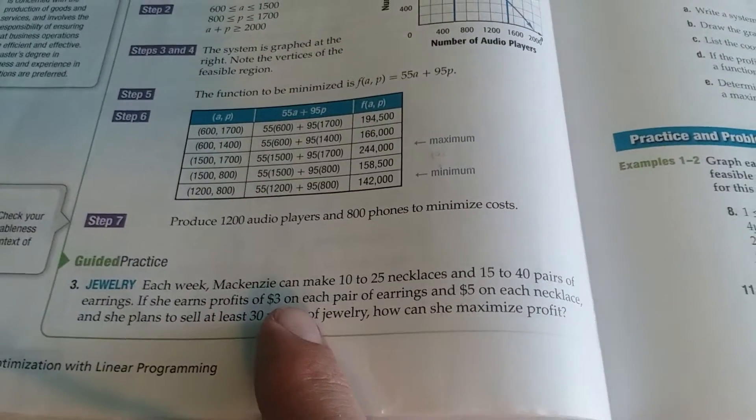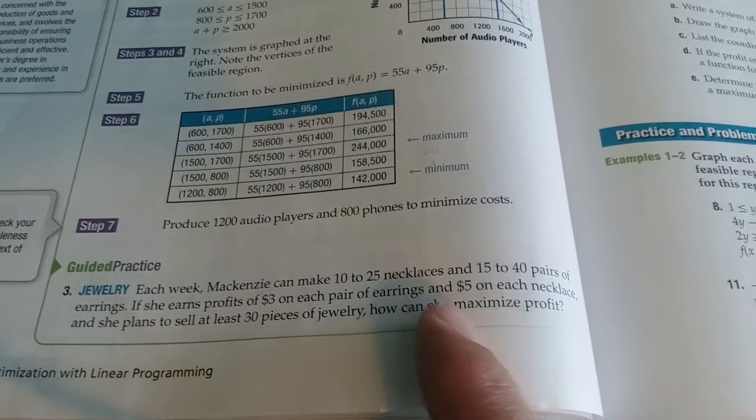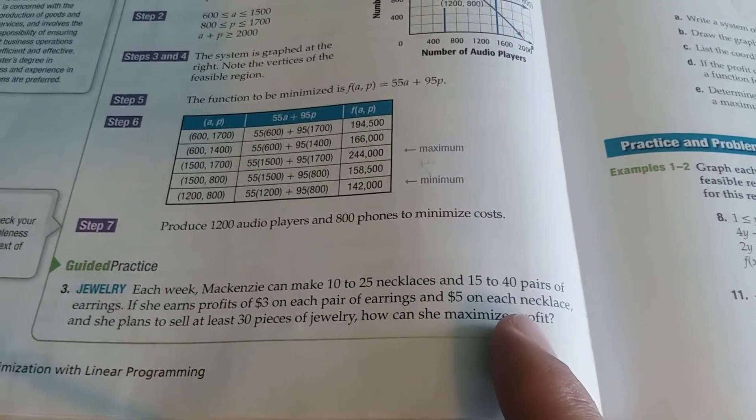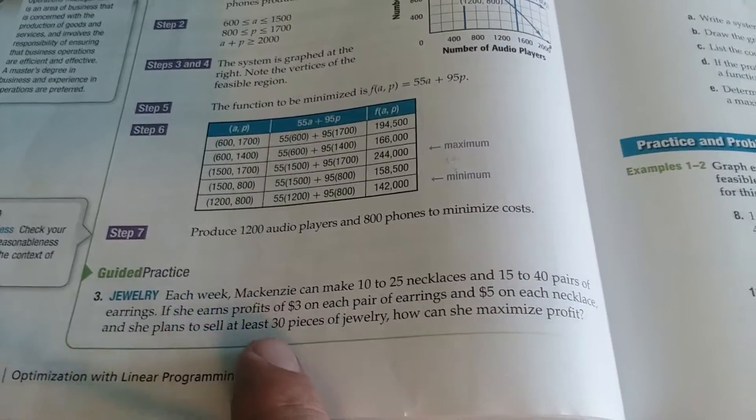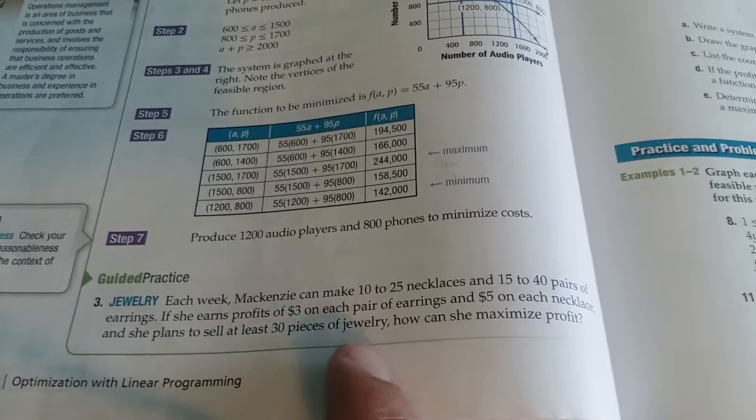If she earns profits of $3 on each pair of earrings and $5 on each necklace, and she plans to sell at least 30 pieces of jewelry, how can she maximize profit? Well, now we have to write a system of inequalities.